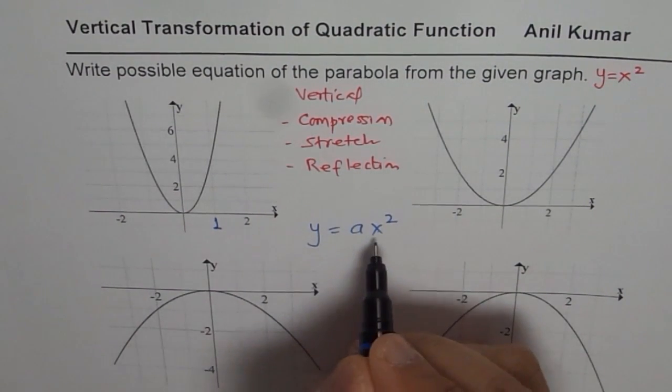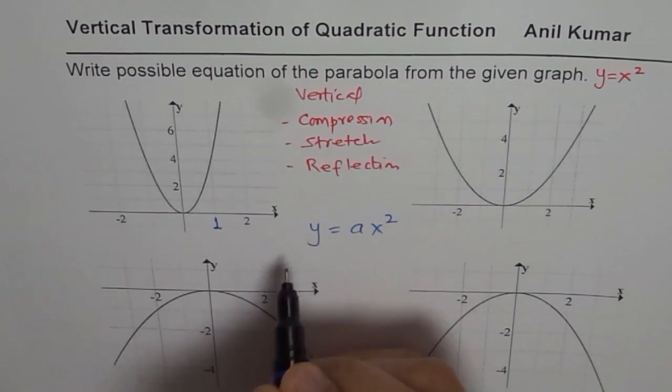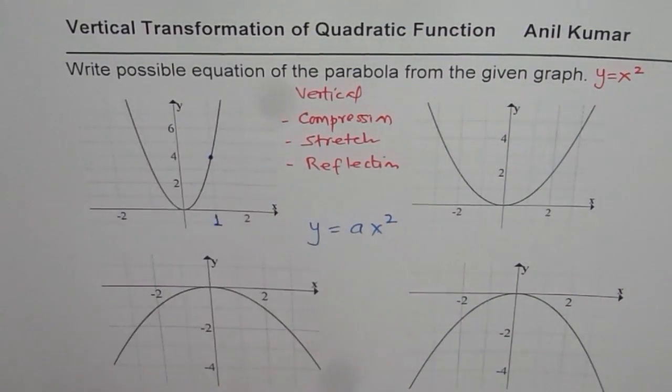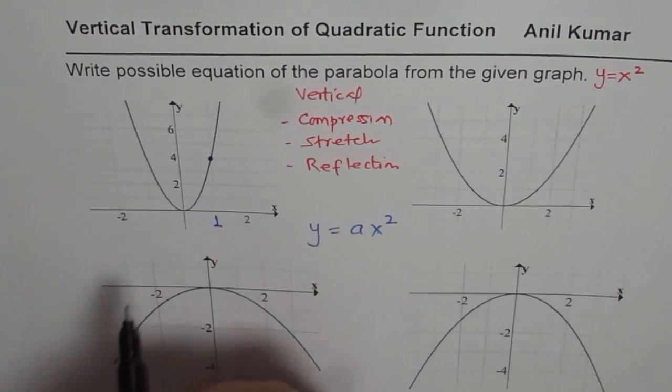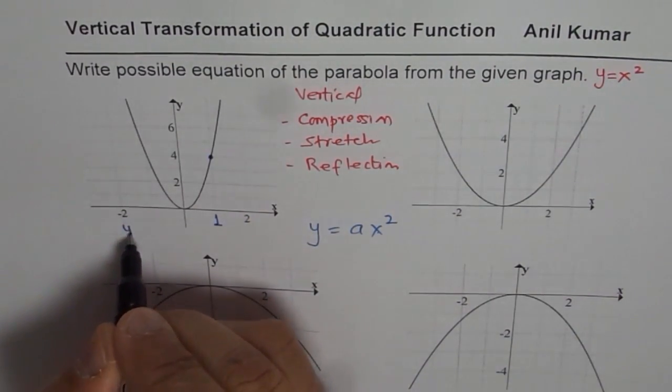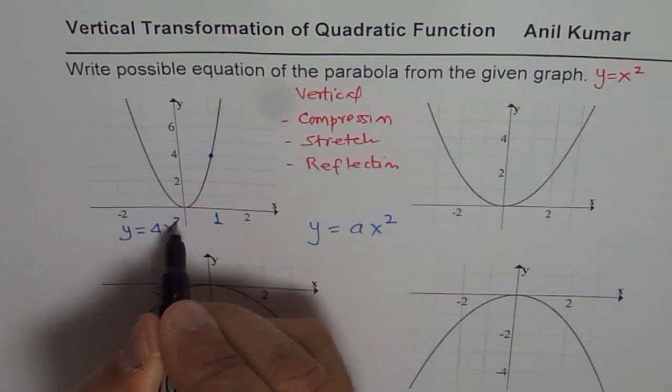If x is 1, y should be equal to a or a should be equal to y. At 1, we have a point which is 4. Therefore, I could write equation of this function or graph of this parabola as y equals to 4x squared.